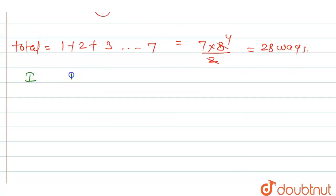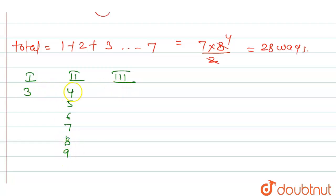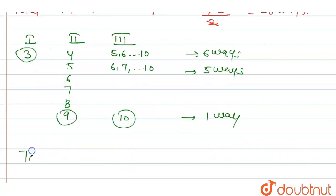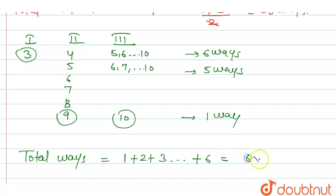Now fix 3 in the first box. If we fix 4 in the second box, remaining choices are 5, 6 up to 10 — 6 ways. Fix 5 in box two gives 5 ways. Fix 9 in box two gives only 1 way — 10 in box three. The sum is 1 + 2 + 3 + ... + 6, which equals 6 × 7 / 2 = 21 ways when n1 = 3.